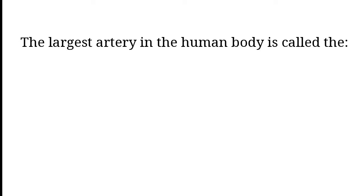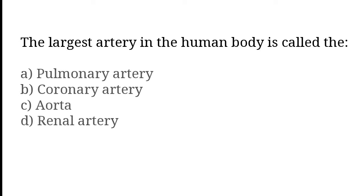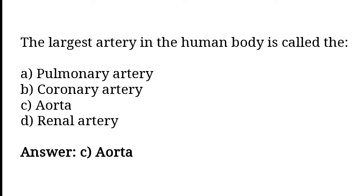The largest artery in the human body is called: pulmonary artery, coronary artery, aorta, renal artery. So the correct answer is option C. The largest artery in the human body is called the aorta.